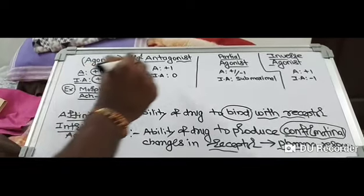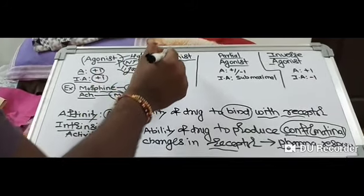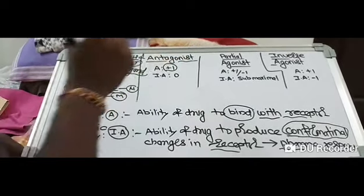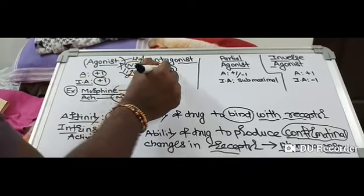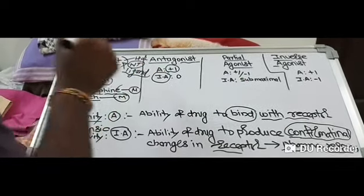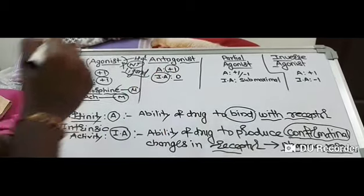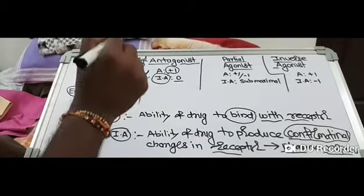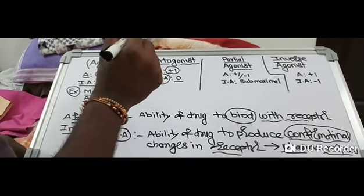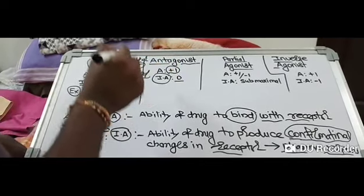Now we'll discuss the antagonist. Antagonists have the ability to bind with the receptor — meaning affinity is plus one — but they don't have any intrinsic activity; intrinsic activity is zero. This is why they are also called neutral antagonists. We can also define an antagonist as a drug that prevents the binding of an agonist to its receptor.